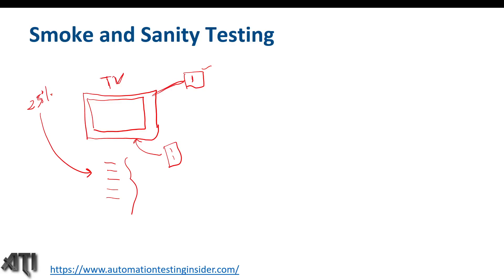If those critical functionality test cases are passed, that's fine — we can go ahead and test those 25 percent features for which we've already written test cases. But just imagine if while testing critical functionality we plug in the power cable, switch on the TV, and some smoke comes out. We would definitely stop and revert this build to the development team, because some smoke is coming out when we switch on the TV — this build is not ready for further testing.